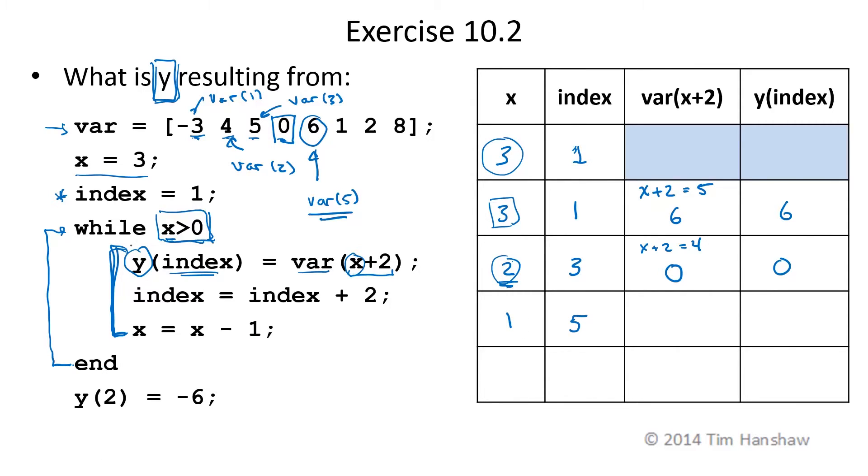We encounter the end statement. We check to see if X is greater than 0. 1 is greater than 0. So we'll do this set of calculations again. X plus 2 is going to be 1 plus 2, which is 3. So when this is 3, the third element of var is 5. And that value is just assigned to Y of index.